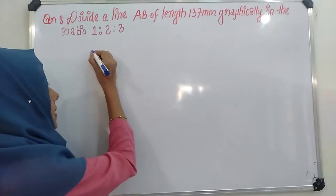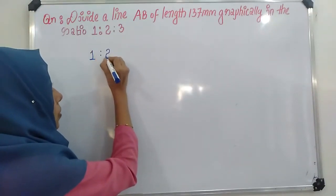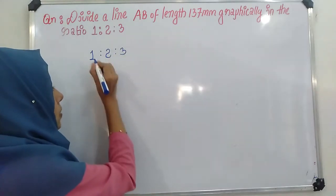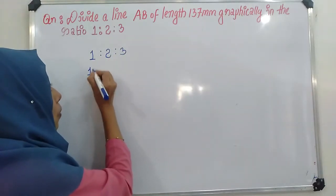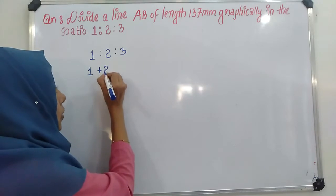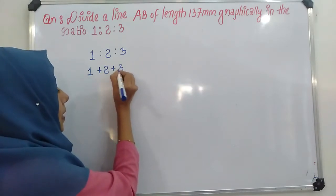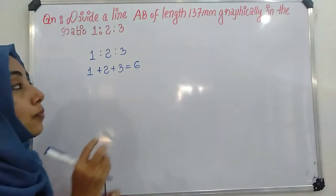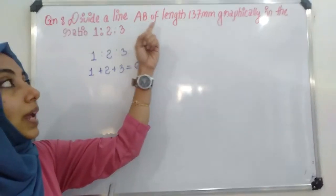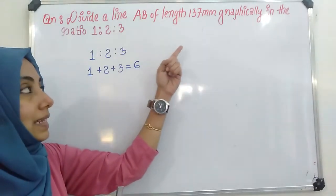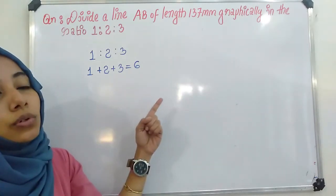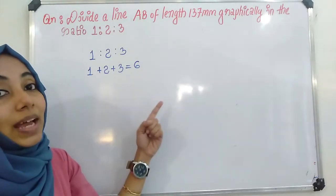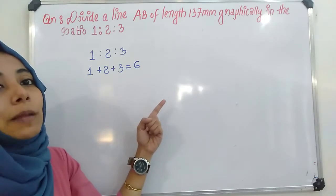The given ratio is 1:2:3. Add like this: 1 plus 2 plus 3 which is equal to 6. So first we have to draw AB of length 137 mm and we have to divide the length of line into 6 equal parts.